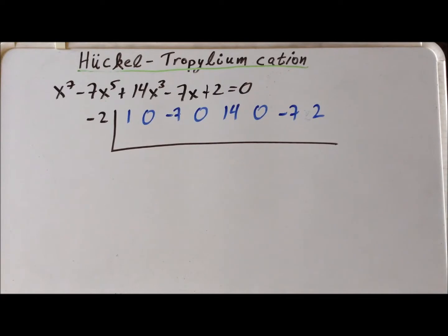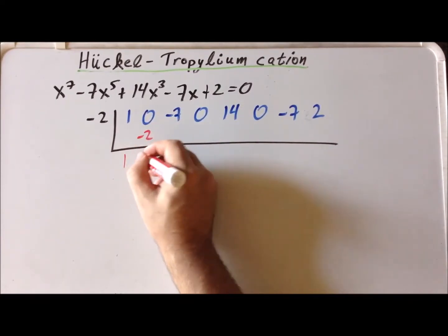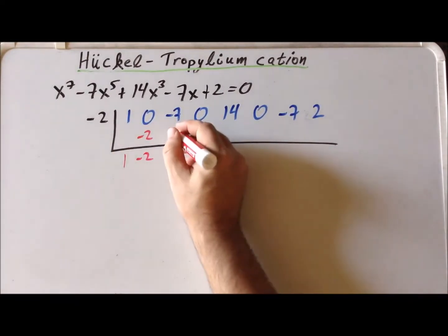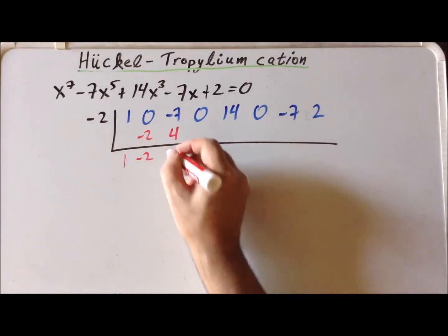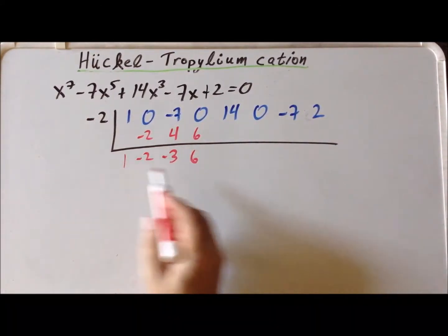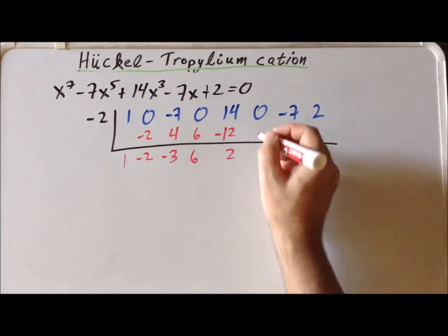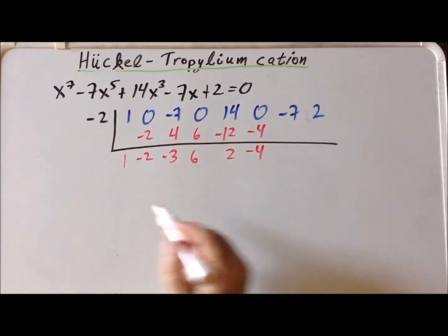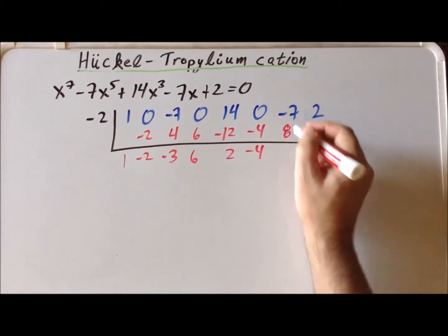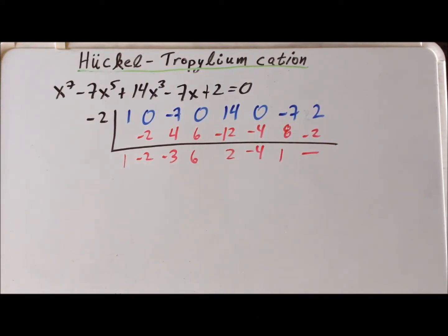The coefficient for x to the first power is minus seven, and then we have just a two. So, now we apply the method. We bring down the one. Minus two times one is minus two. Then we add these two terms together to get a minus two. Minus two times minus two is a positive four. Minus seven plus four is minus three. Minus two times minus six is six. This is equal to six. Minus two times six is minus twelve. Fourteen minus twelve is equal to two. Minus two times two is minus four. Minus two times minus four is positive eight. This gives us one. Minus two times one is minus two. And since we get no remainder, this tells us that minus two is actually a root of this particular polynomial equation.